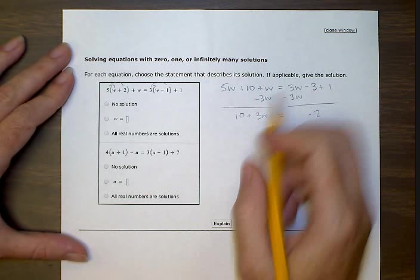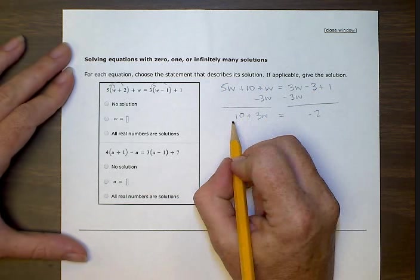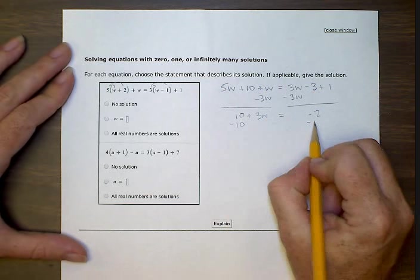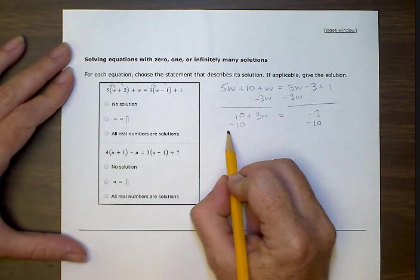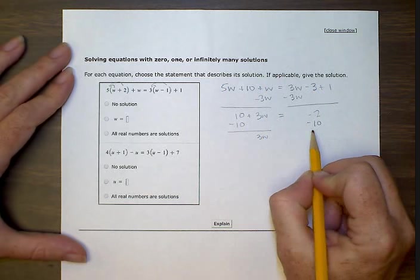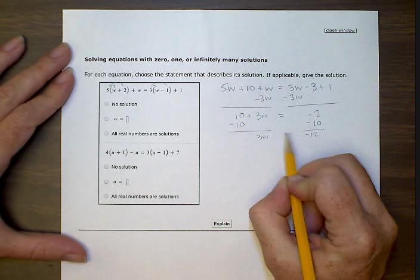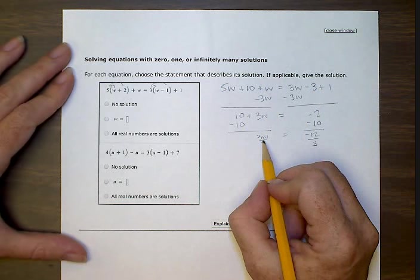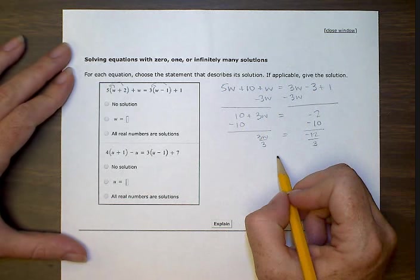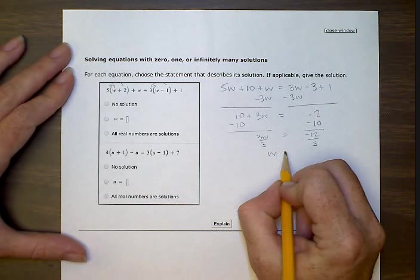So now we want to move this ten over to the other side. So we'll subtract, and that's the opposite of ten. That gives us 3w on this side, and minus twelve over here. Now we're going to divide by three on both sides to get rid of this coefficient of three. w equals minus four.